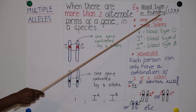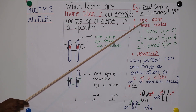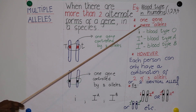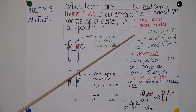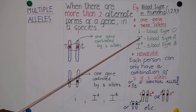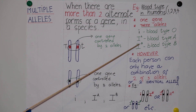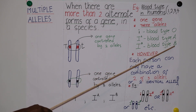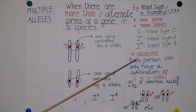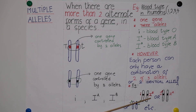An example of multiple alleles is blood type in humans. For blood type, please remember 1, 2, 3, 4. One: blood type is controlled by one gene. Three: this single gene can be controlled by three different alleles — small letter i representing blood type O, capital I superscript A representing blood type A, and capital I superscript B representing blood type B. Two: each person can only have a combination of two of the three alleles, or two identical alleles such as small i coding for blood type O.